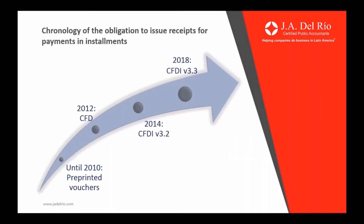In order to start with the presentation, we would like to make reference to this chronological line. Most of you should know that before the year 2010, the way in which taxpayers should issue the receipt or invoice for transactions was through pre-printed vouchers. In this case, taxpayers should have an authorized printer that would only allow a serial number for pre-printed forms. In case you were out of these pre-printed forms, you would need to request access to the authorized printer to give you more serial numbers so you could continue to issue invoices to your customers.